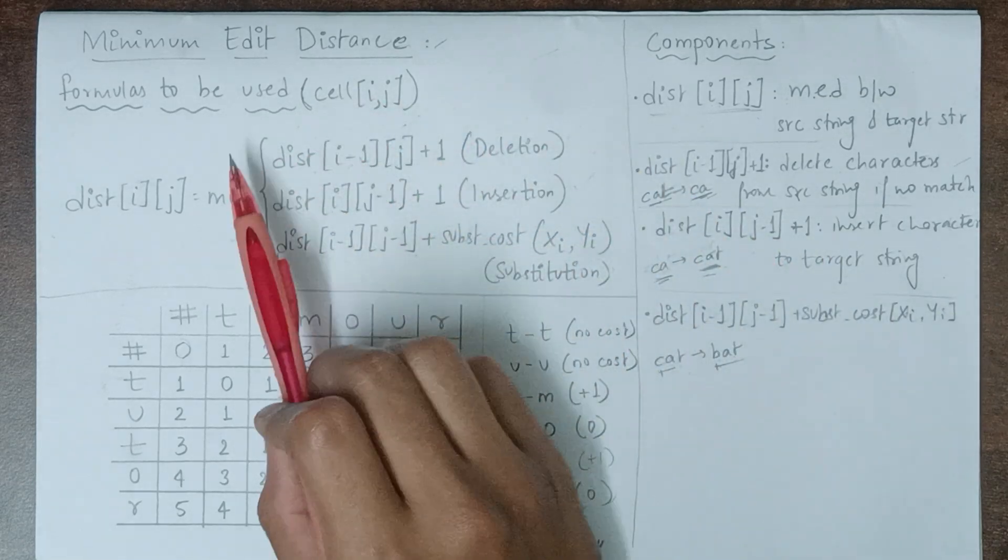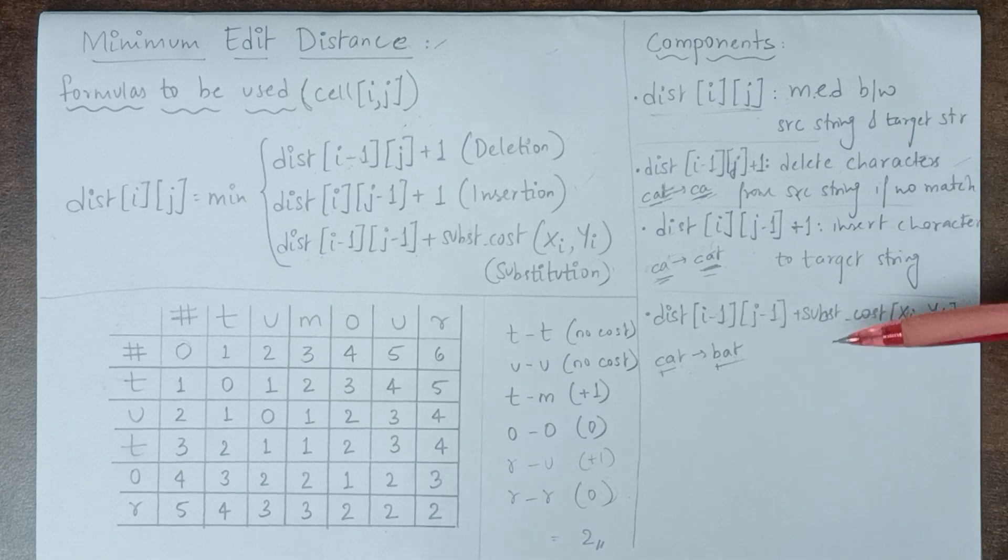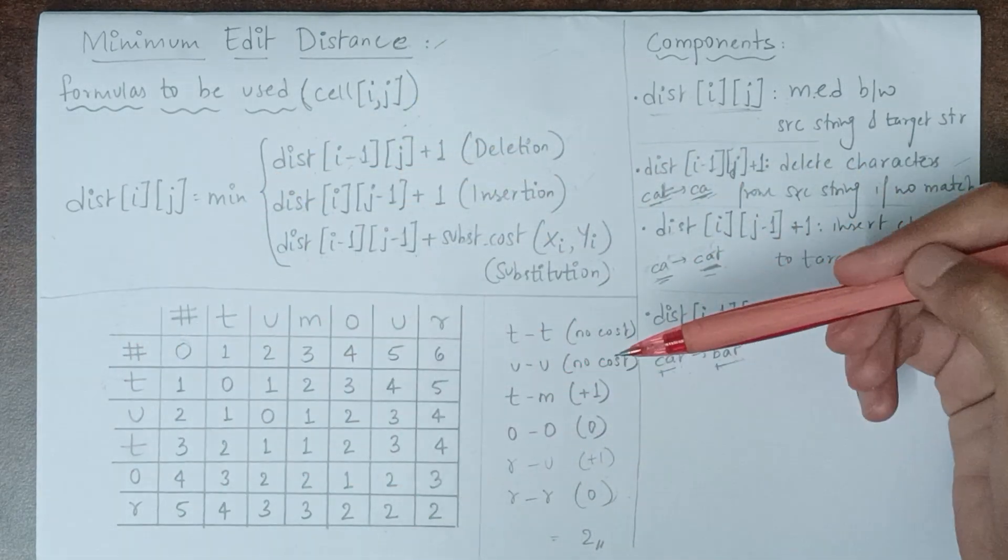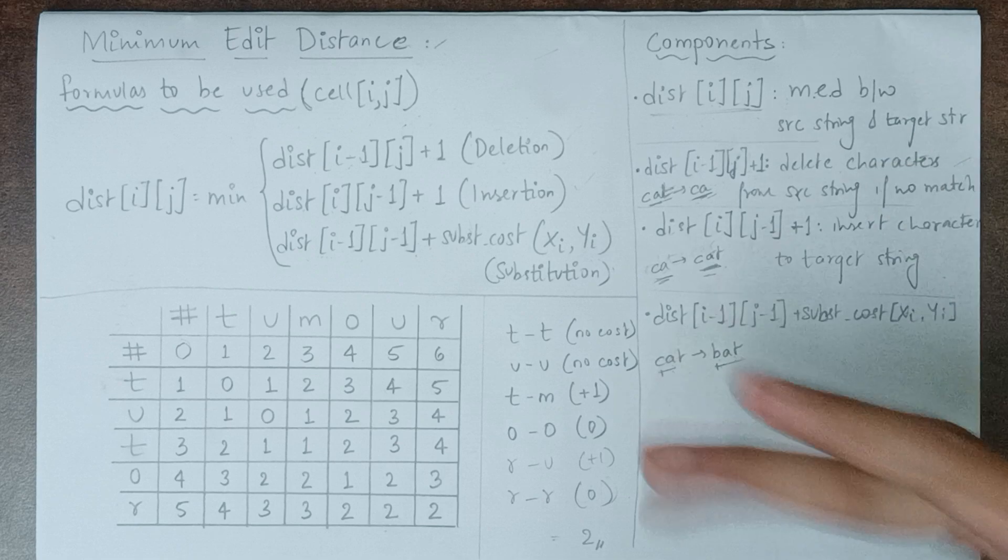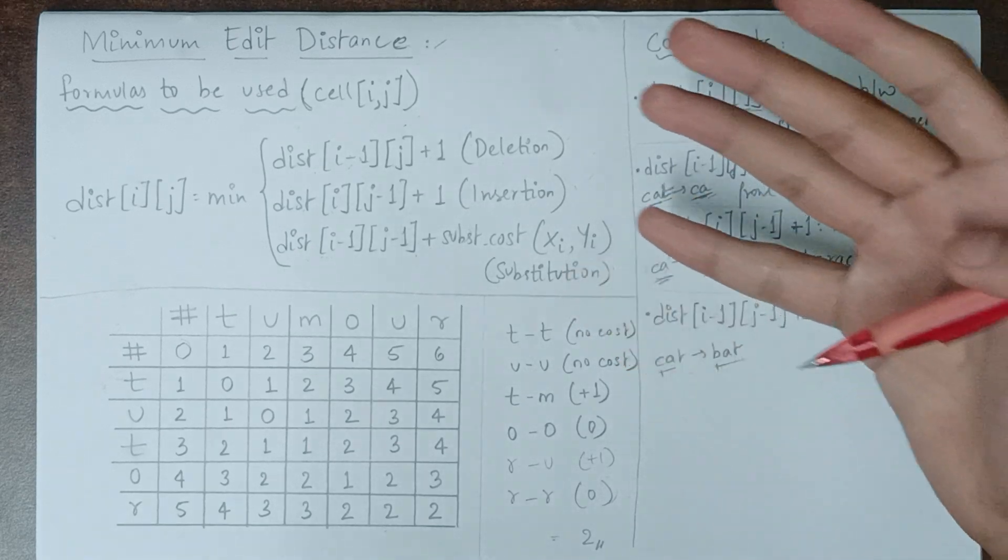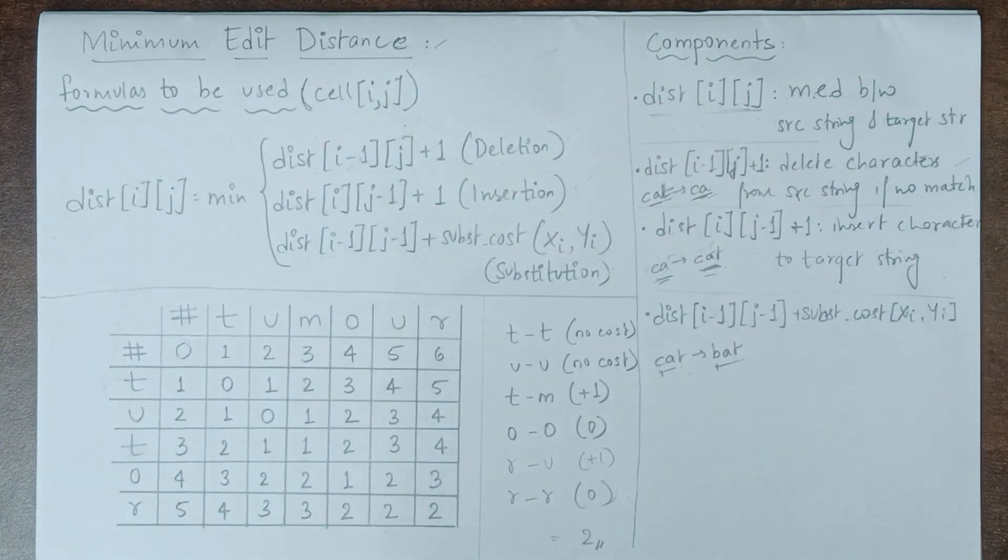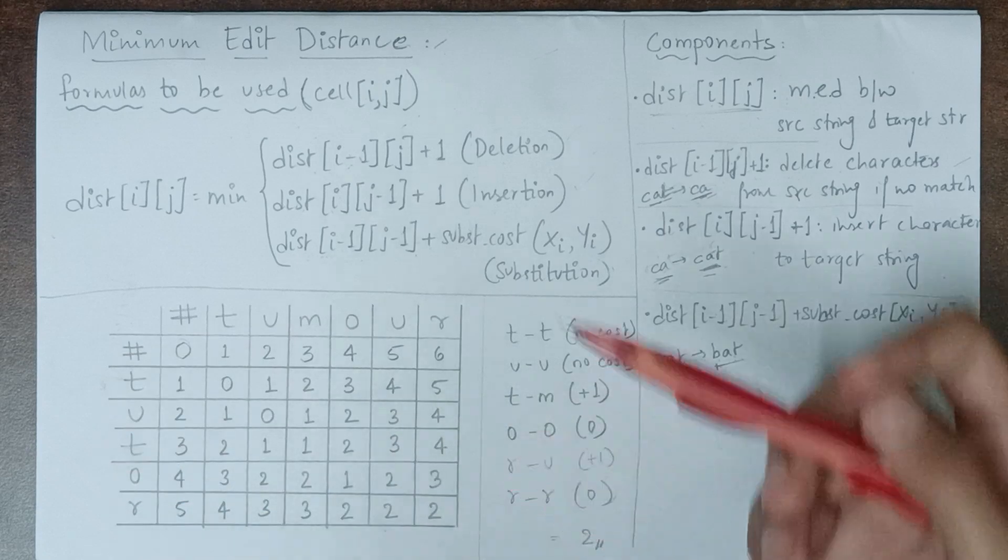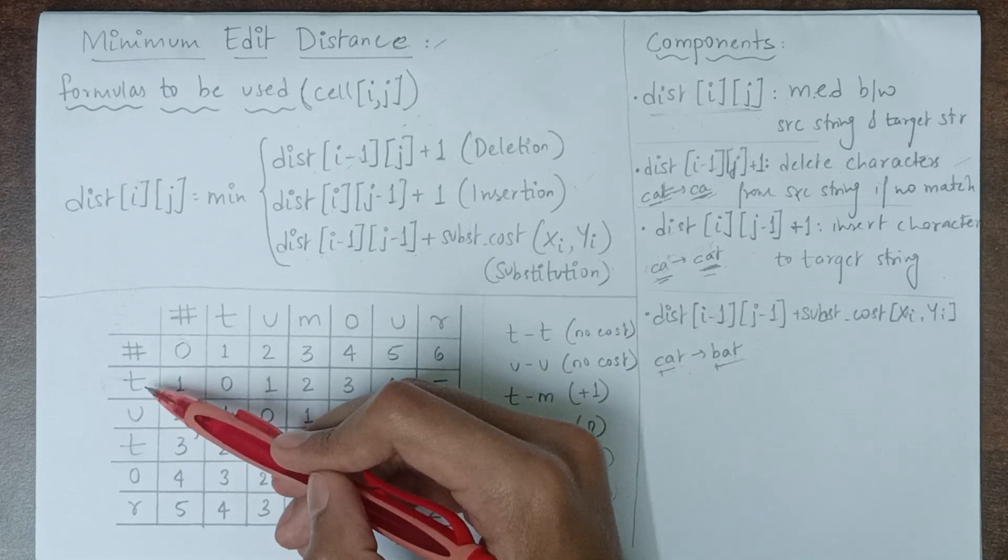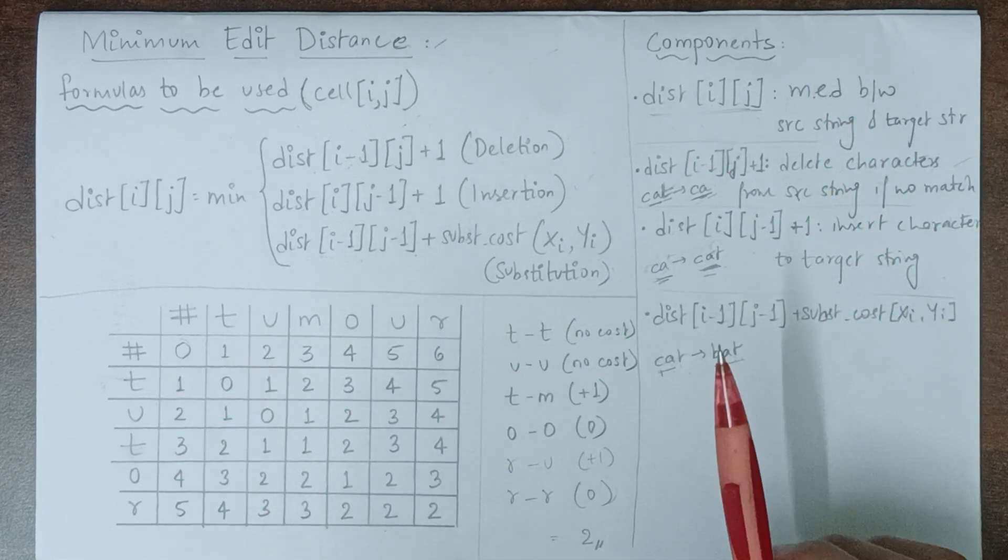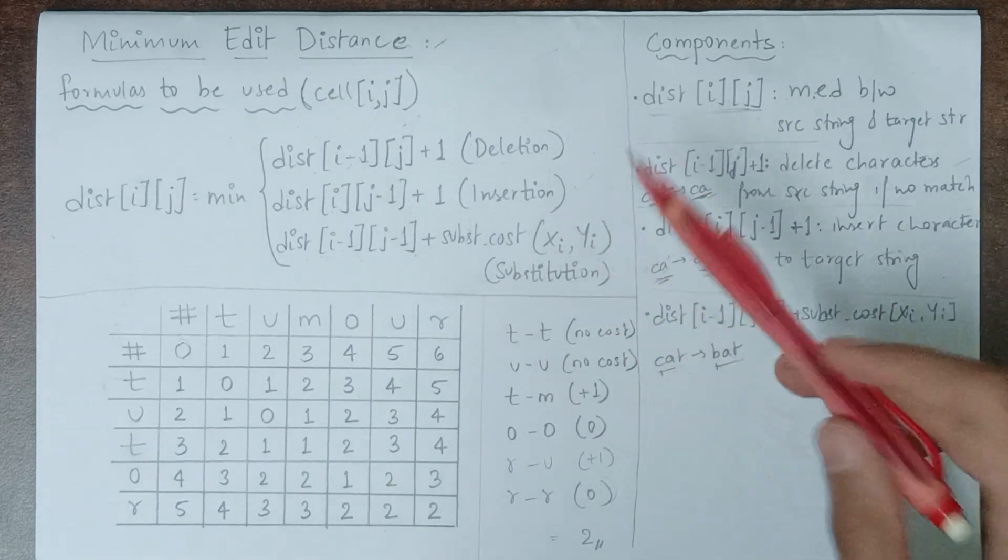Now that we've understood the formulas and operations, let's move to another example to understand how the minimum distance algorithm works and how a table is made to show the changes needed to obtain the target string from the source string. In this table, I've mentioned a source string 'tutor' and a target string 'tumor'.